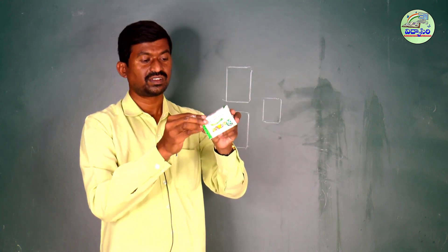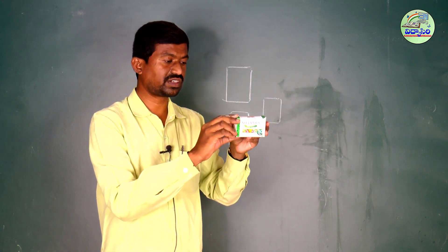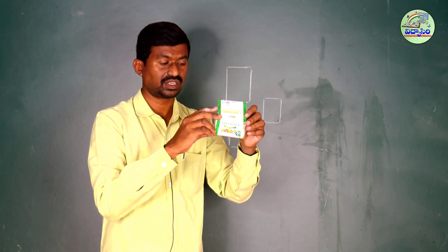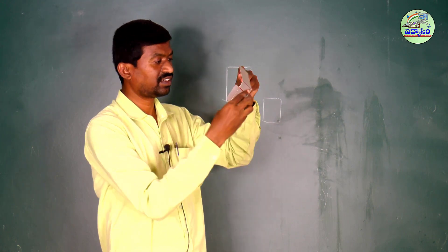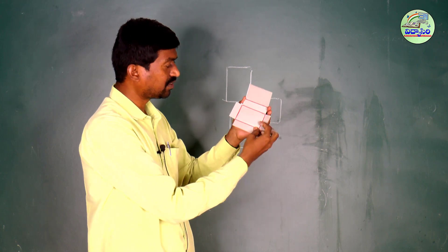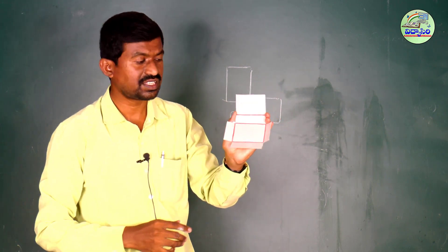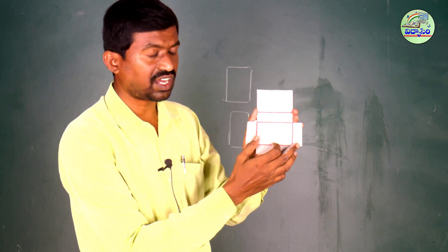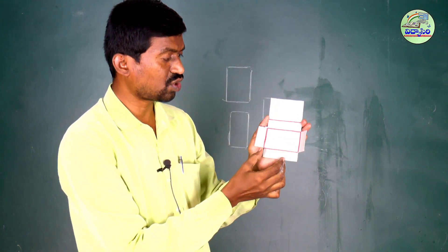Same — another soap box. I am opening this. See, inside it is looking like this. This is called the net of the soap box.